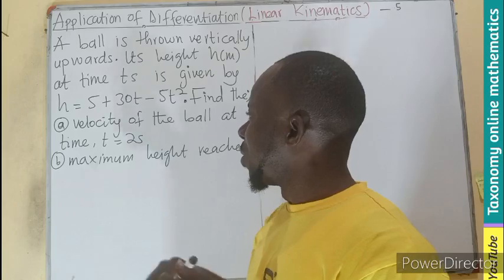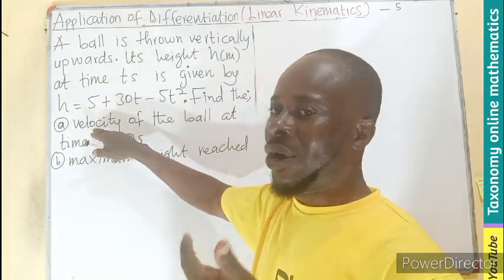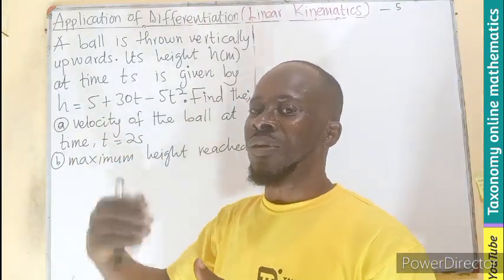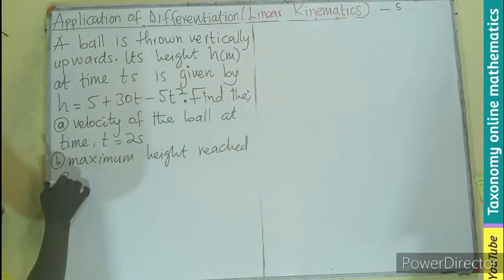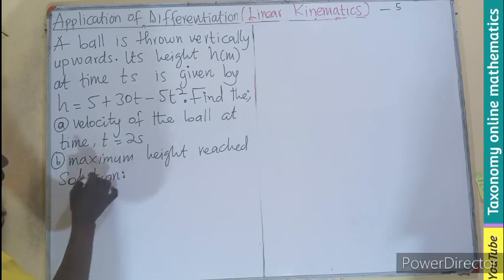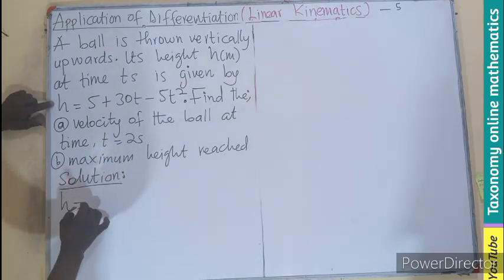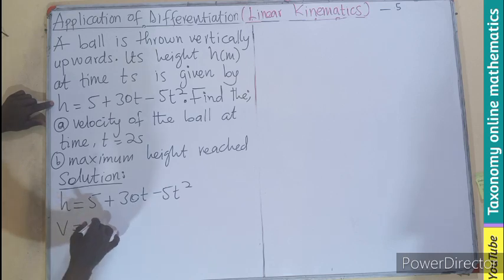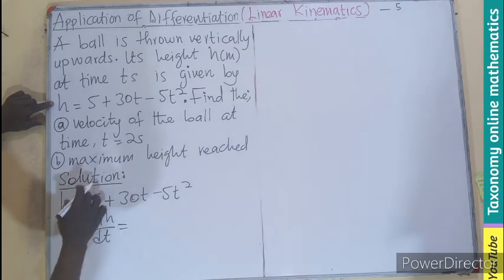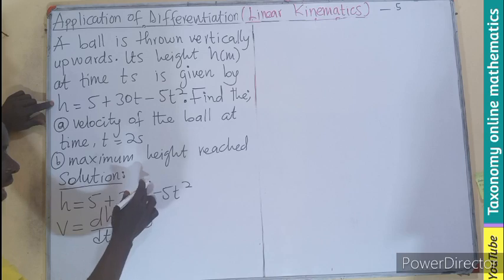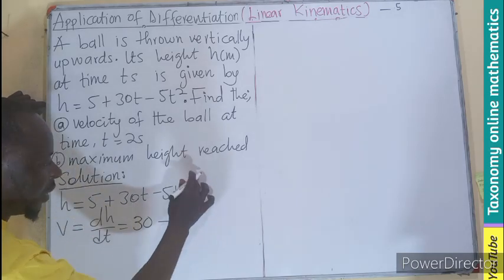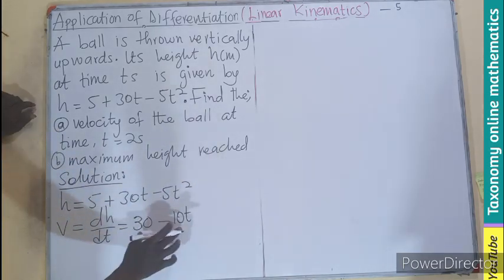If you look at this carefully, we know h is the displacement and we need velocity. Velocity is displacement over time, meaning differentiation of the displacement with respect to time. So given h equals 5 plus 30t minus 5t squared, velocity is the differentiation of h with respect to t. That gives us 0 for the constant, 30 for the t term, and minus 2 times 5 gives 10t. So velocity v equals 30 minus 10t.